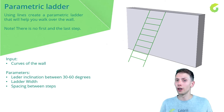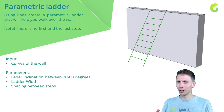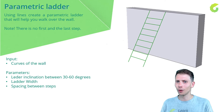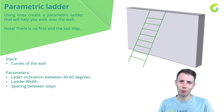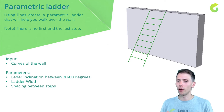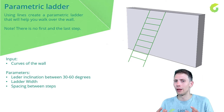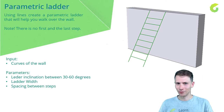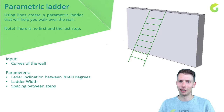As an input we are going to have just the curves of the wall. You can see a picture on screen showing this ladder — it's simple curves with simple steps, and the aim is to go over this wall. As parameters, we need to include inclination between the wall and the ladder, the width of the ladder, and the number of steps or the spacing between steps.